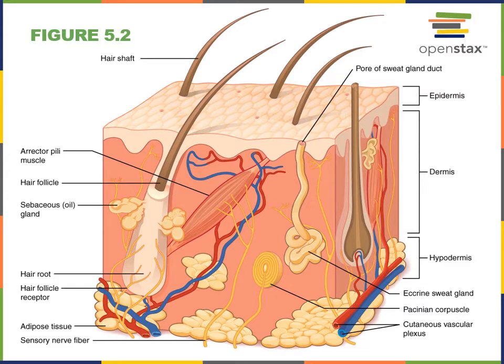The word integument comes from the Latin word for a covering and refers to the skin, which is the cutaneous membrane, composed of epidermis and dermis. The cutaneous membrane is the largest organ of the body and the primary organ of the integumentary system. The epidermis is the superficial keratinized stratified squamous epithelium facing the exterior of the body, and the dermis is just deep to the epidermis and is composed of connective tissue.